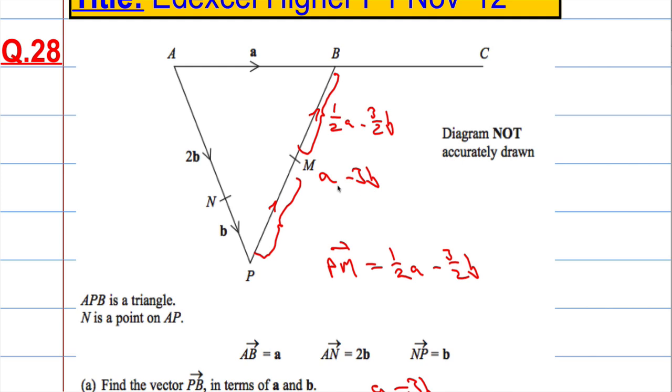So this here, a minus 3b, is the total, is the whole vector from P to B. And then half a minus 3 over 2b is from P to M, and it's the same from M to B.